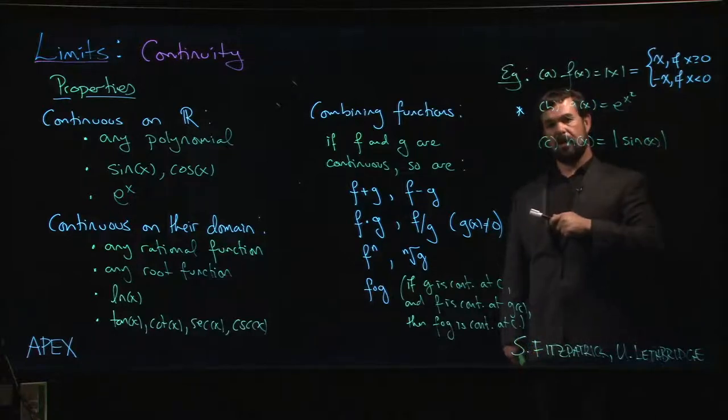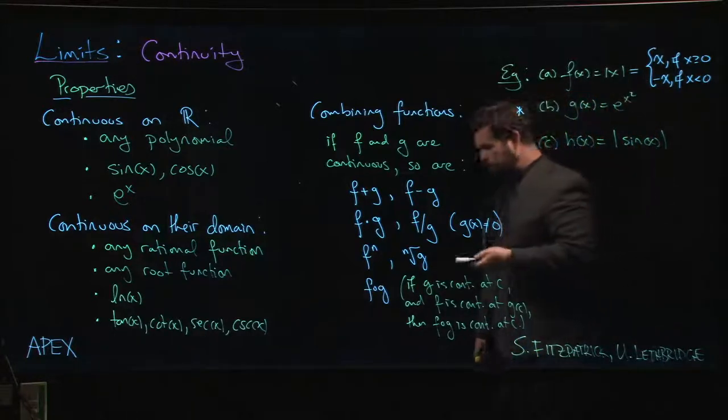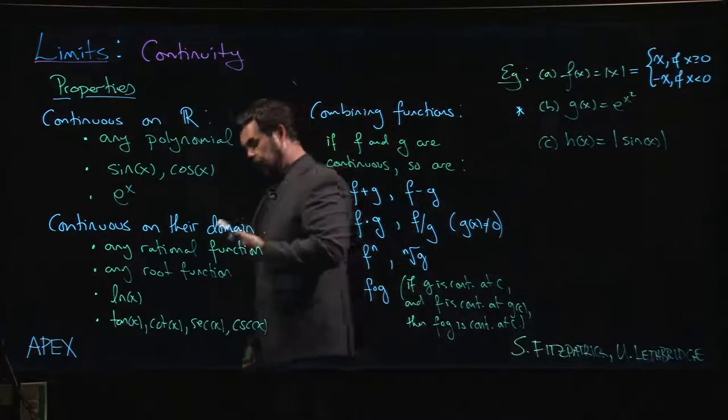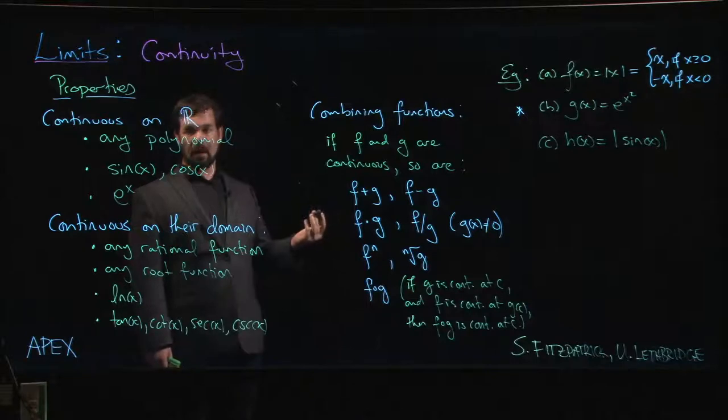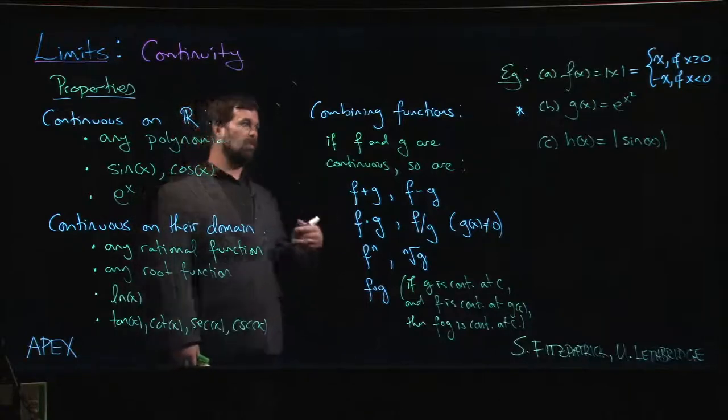Similarly, I know that it's continuous at every positive x value because again it's given by a polynomial. The only point that's in doubt is zero. So how would I convince you that this function is continuous at zero?